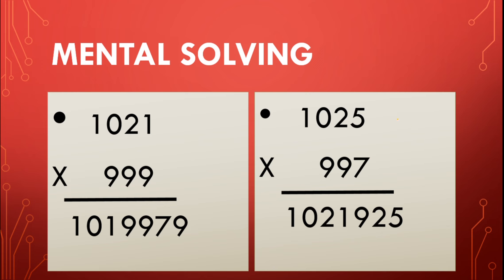So here our answer is 1,022,000. Now we would subtract 75 from this. So what we would get? 1,021,925, which is the answer.